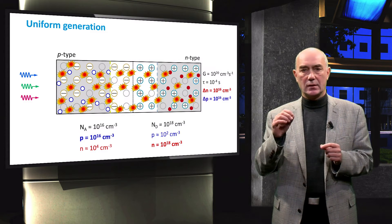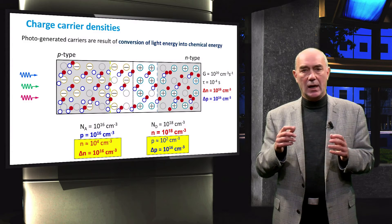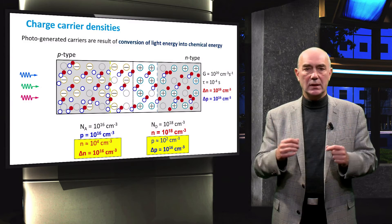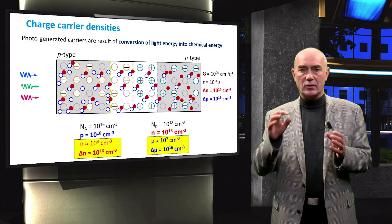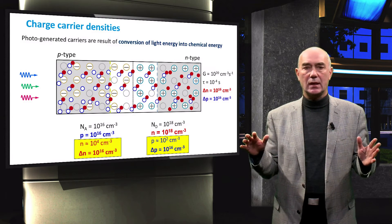Looking at these numbers more closely, the injection level of 10^16 is at the same or lower order of magnitude than the majority carrier concentration. The hole concentration in the P-type region is 10^18 carriers per cm³, so adding 10^16 carriers does not significantly alter the majority carrier concentration. Minority carriers, on the other hand, are 12 to 14 orders of magnitude below the injection level, meaning illumination significantly increases minority carrier concentration while essentially leaving majority carrier concentration unchanged.